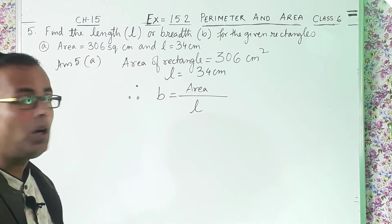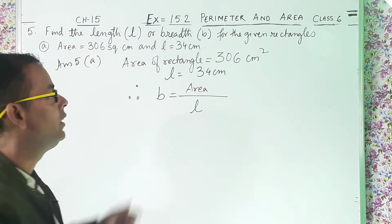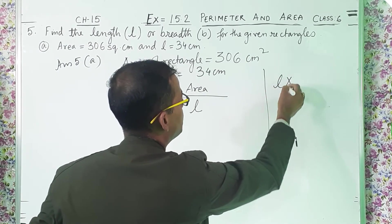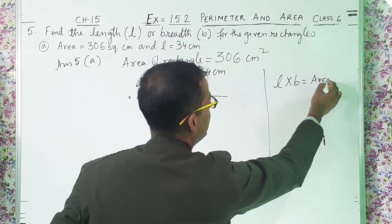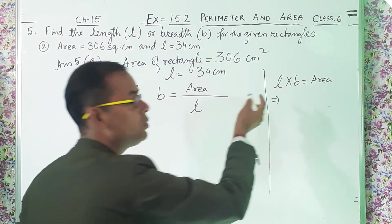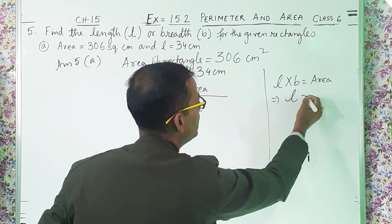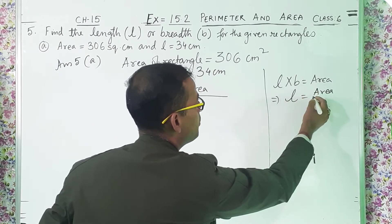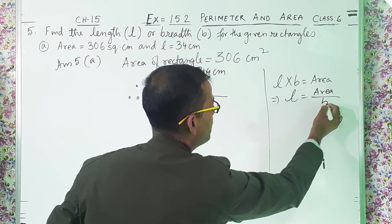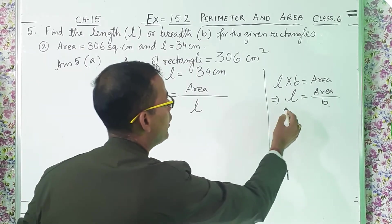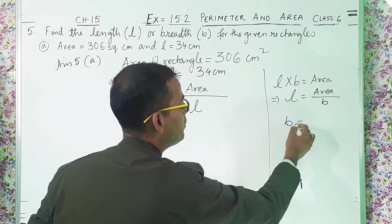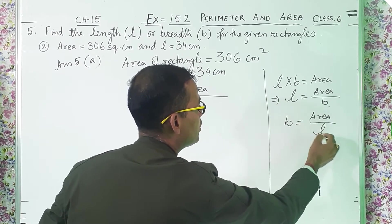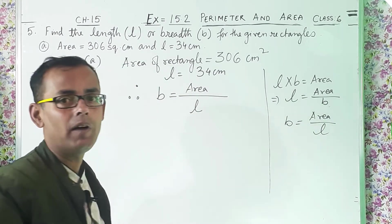You will be thinking how we got this formula. I will show you that also. Length into breadth equals area of a rectangle. So if you want to find out length, keep length on this side and transfer the breadth to the other side — into breadth will become divided by breadth. And if you want to find out breadth B, then area divided by length — into length will become divided by length.